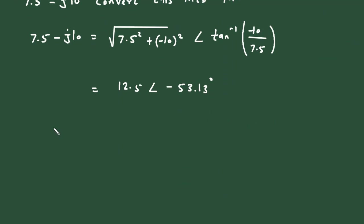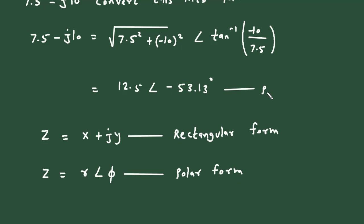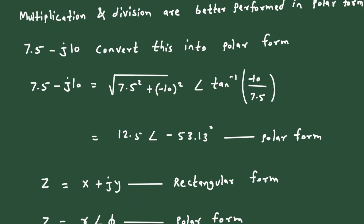Remember that z equals x plus jy is the rectangular form, and z equals r at an angle phi is the polar form. We use polar form for multiplication and division, as these arithmetic operations are better performed in polar form.